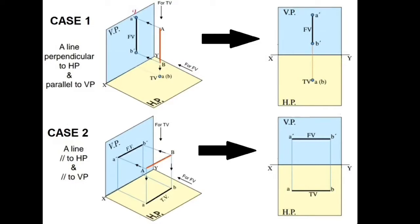In case number two, the line is parallel to HP and parallel to VP. In the front view, the projection of the line falls on the vertical plane as a straight line. In the top view, the shadow also falls on the horizontal plane as a straight line. In the orthographic projection, both front view and top view are parallel to the XY line, represented as A'B' and AB. Since this is in the first quadrant, the front view is above the XY line and the top view is below.